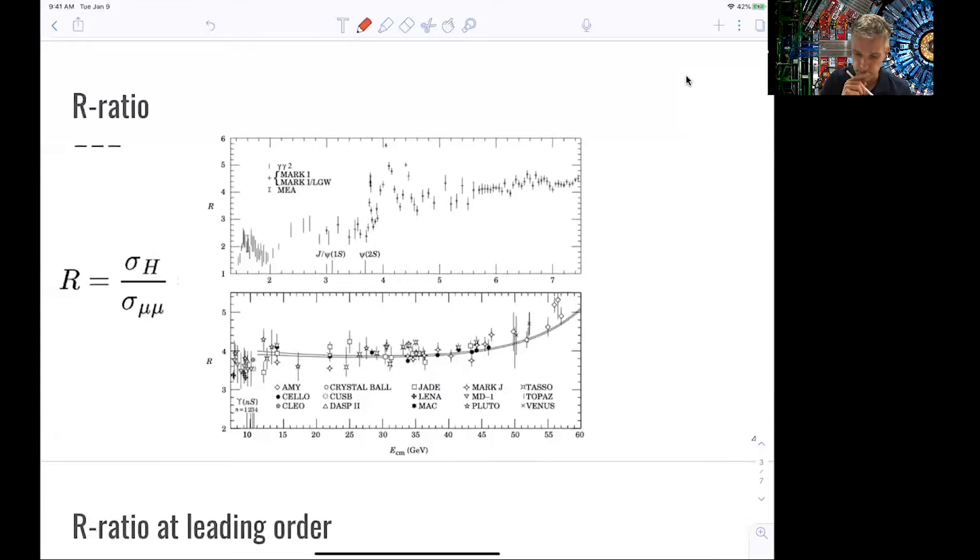So you see as a function of energy, here from 1 GeV to 7 GeV center of mass energy, and then the lower plot just continuing from about 10 to 60 GeV. What you see here is that there is a rich structure. So you see those resonances here. And you also see that there seemed to be some sort of increase in the value of this ratio. So how can we now understand this?